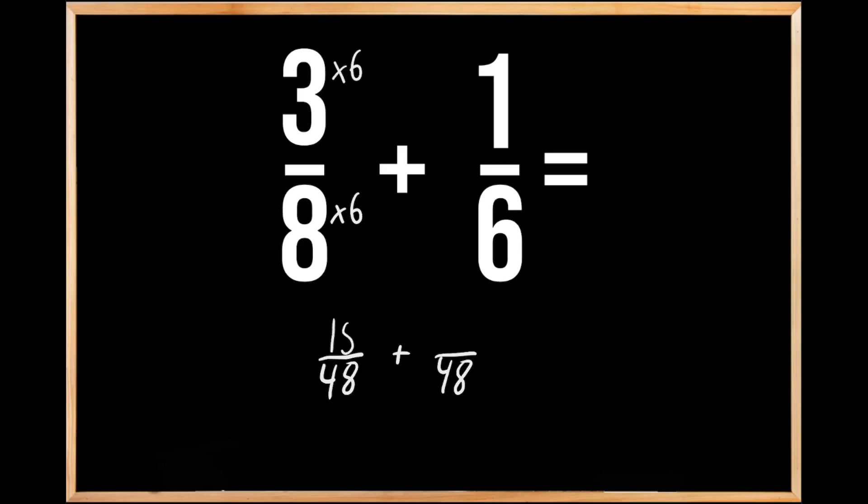For the second fraction, we had to multiply our denominator of 6 by 8 to get 48. So we're going to do the same thing to our numerator. When we multiply 1 times 8, we get 8 for the fraction of 8/48.